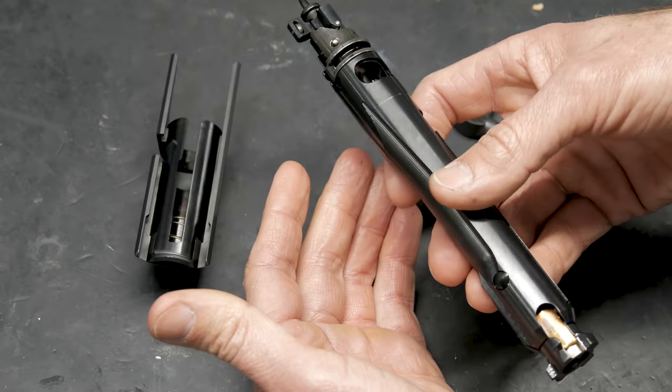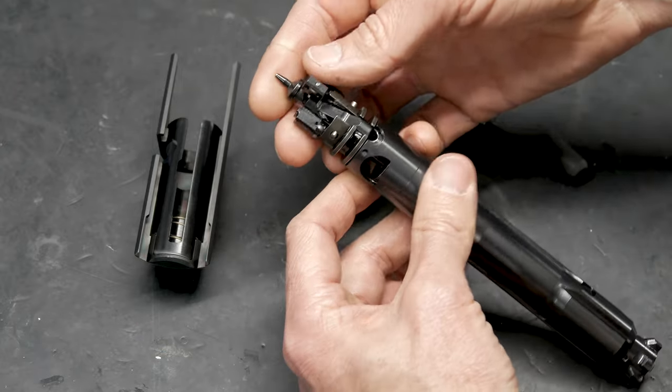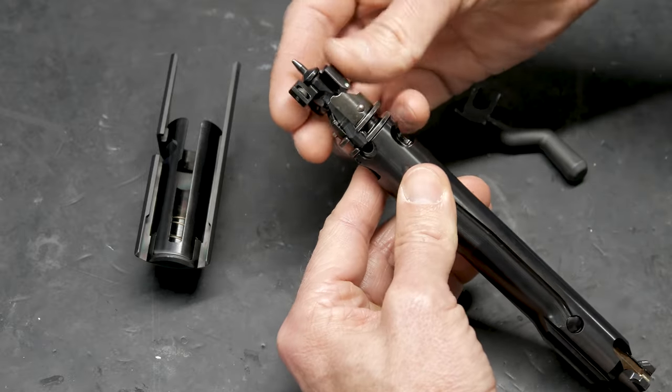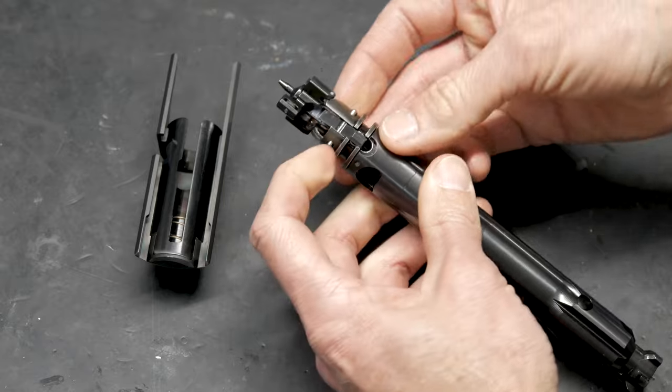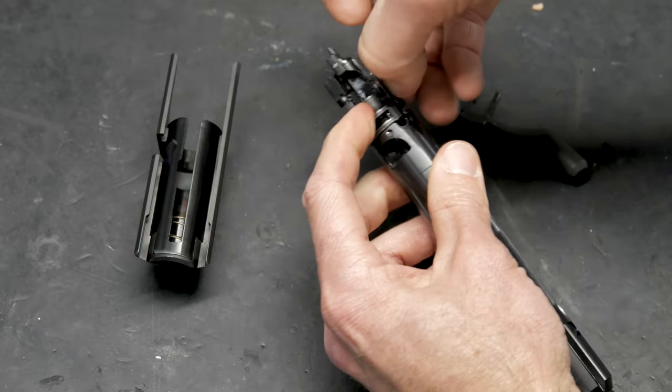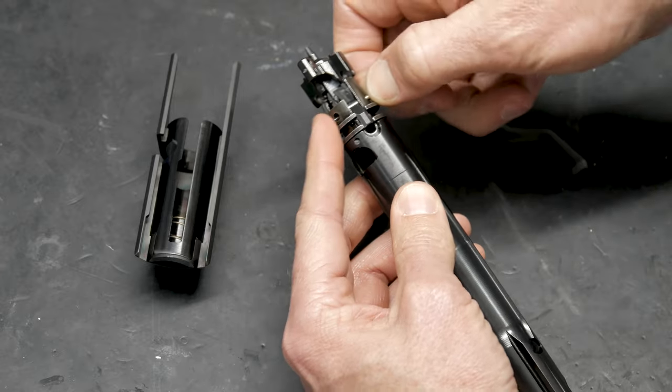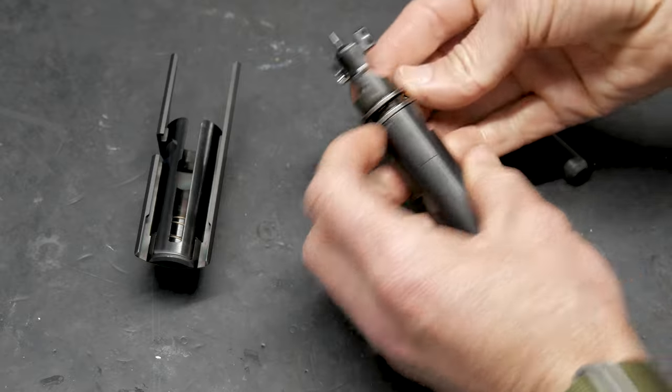We now have this apart, which is pretty much as far as you need to get it apart in order to clean it. If you're playing around and you see that pin, you rotate the cocking piece into the overcock position, you can actually press this pin out. Depending on the orientation of this, with the bolt facing that way, it's going to go from left to right, and that's going to let you take your sear out.